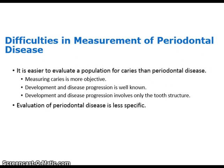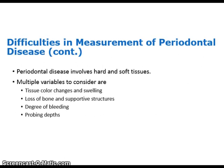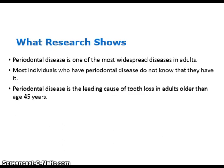It is easier to evaluate a population for caries than for periodontal disease. Measuring caries is much more objective, and development and disease progression is well known, involving only the tooth structure. Evaluation of periodontal disease is less specific. Periodontal disease involves hard and soft tissues, and there are multiple variables to consider, some of which are tissue color changes and swelling, loss of bone and supportive structures, the degree of bleeding, and probing depths. Research shows that periodontal disease is one of the most widespread diseases in adults.